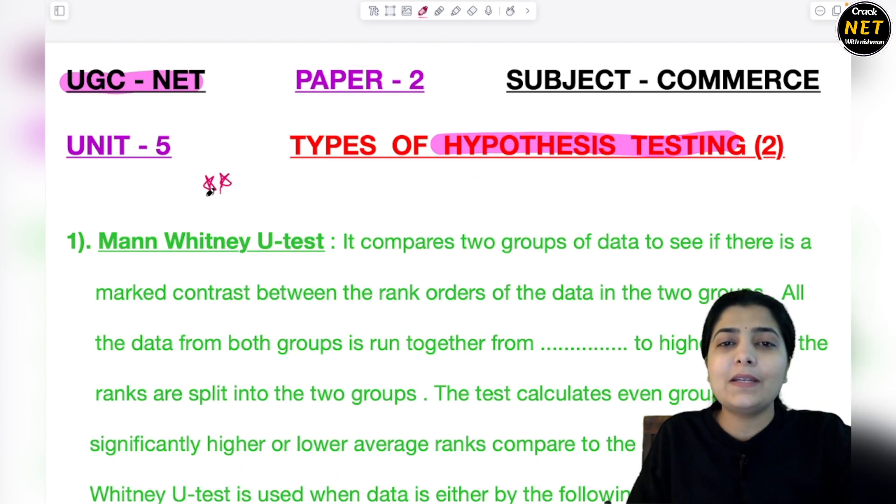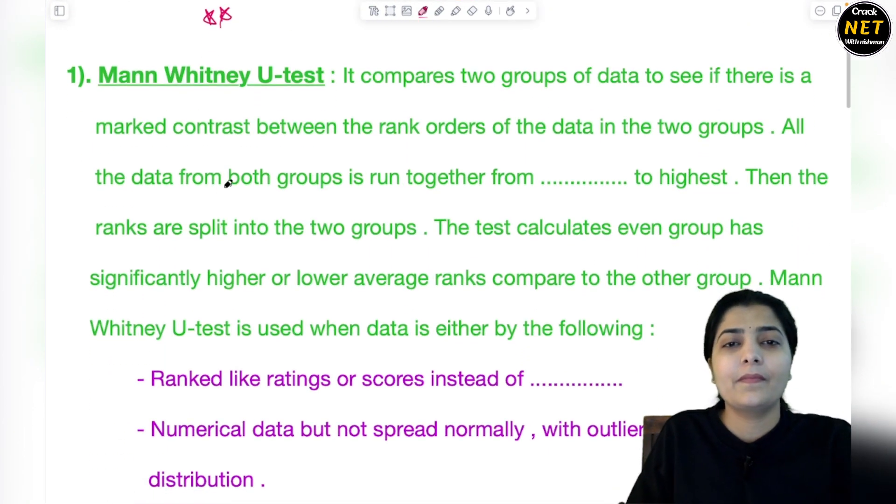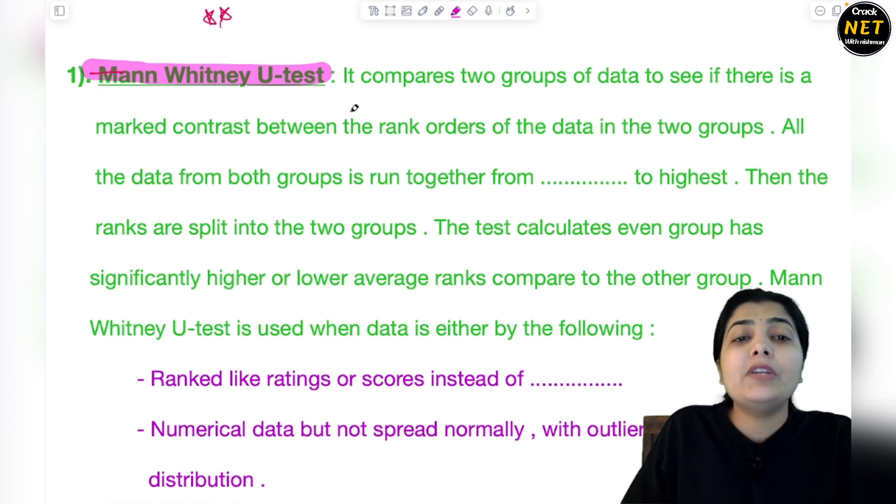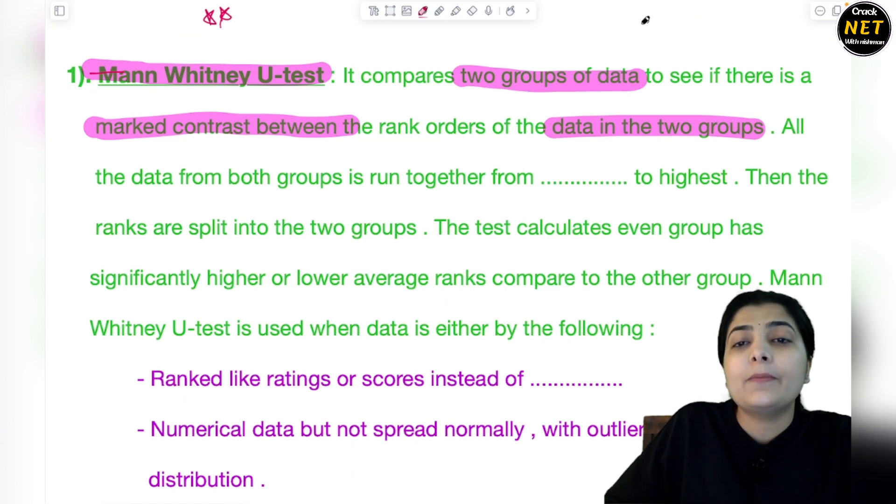Without wasting time, let's start with Mann Whitney U-test. The very first after the tests we did in last session is Mann Whitney U-test. How do you test hypothesis with Mann Whitney U-test? It compares two groups of data to see if there is a marked contrast between the rank orders of the data in the two groups. Is there any difference in the ranks of both groups?